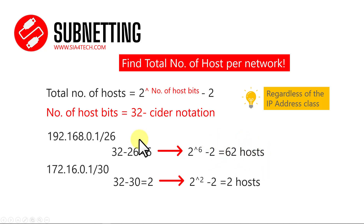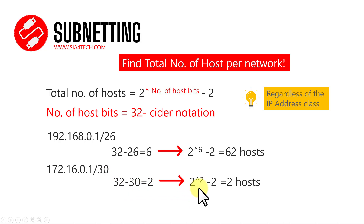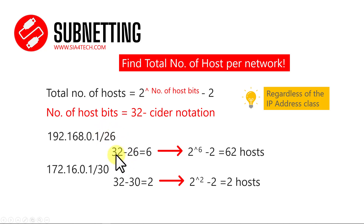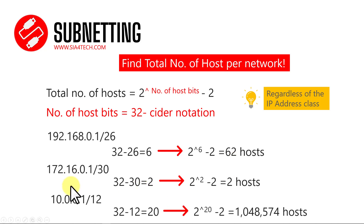The second example uses 172.x.x.x, which is Class B, with CIDR /30: 32 minus 30 equals 2, so 2 to the power of 2 minus 2 equals 2 hosts per network. Regardless of the IP address class, this same formula applies. The third example is Class A: 32 minus 12 equals 20, so 2 to the power of 20 minus 2 gives the number of hosts in that network.